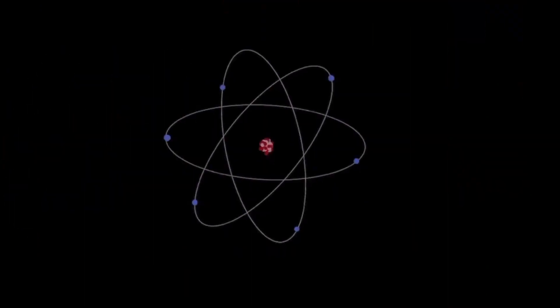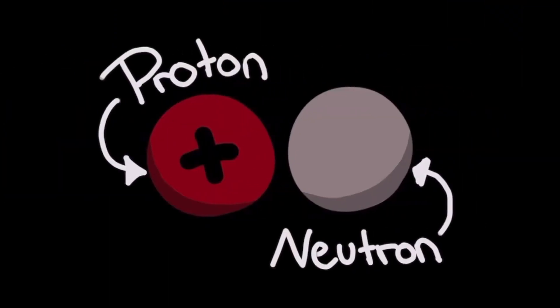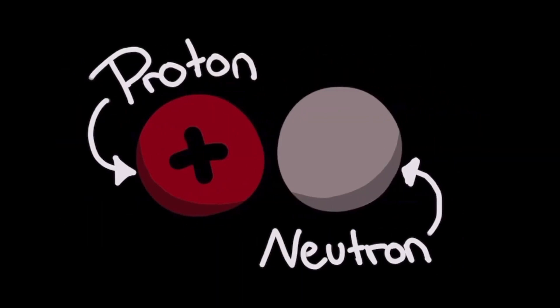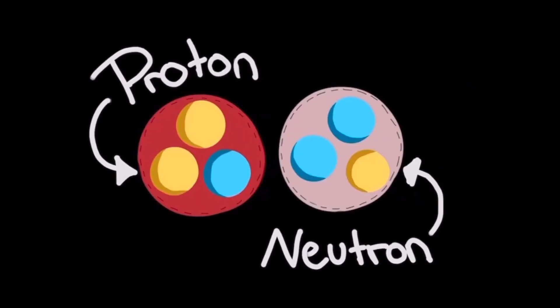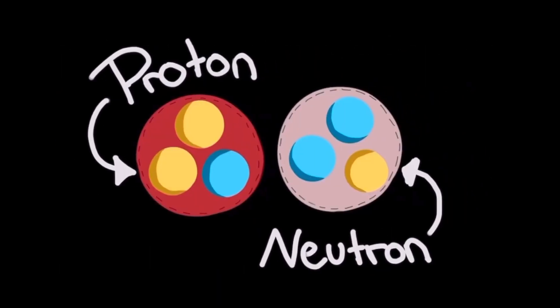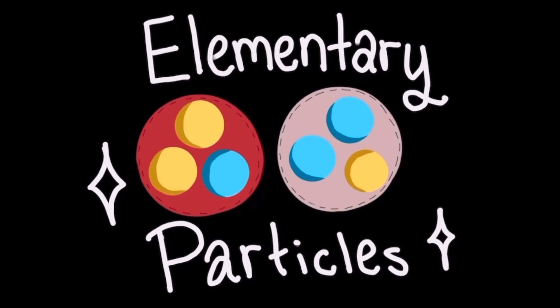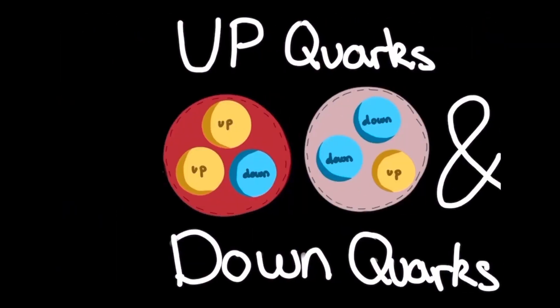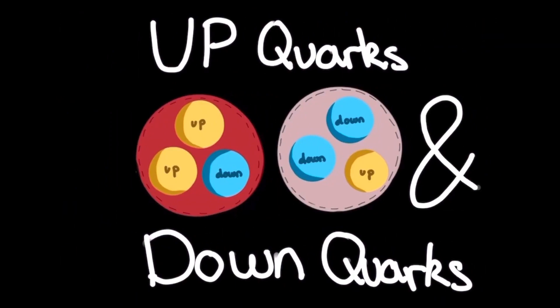And I'm talking quantum, so I mean small — not atom, not nucleus, not particles within a nucleus. I'm talking the particles that make up the particles within a nucleus: elementary particles. And without a joke, these are called up quarks and down quarks. Points for originality, physics.